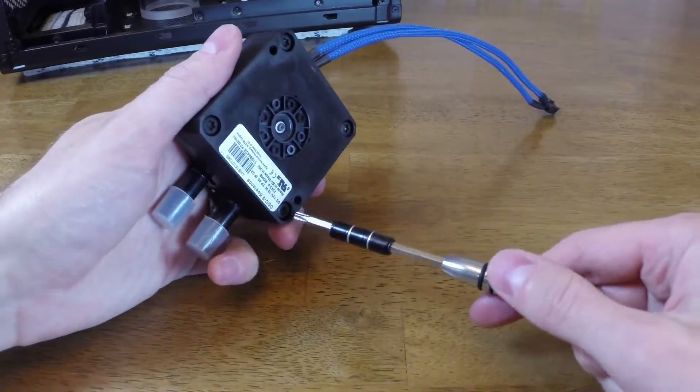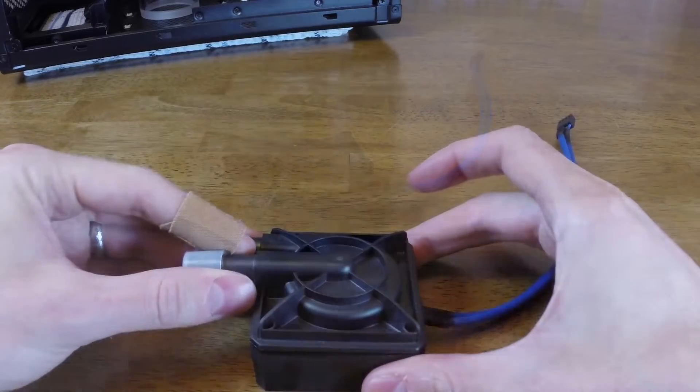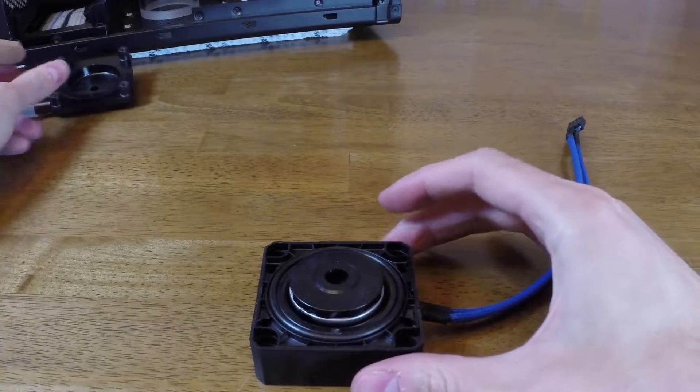To begin, remove the four screws from the bottom of the pump. Next, remove the pump from the casing.